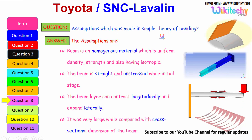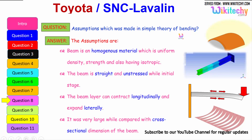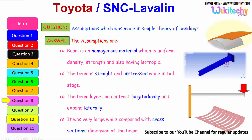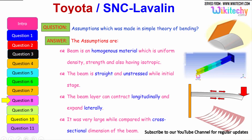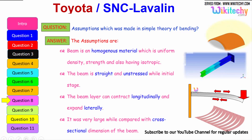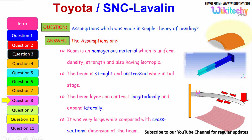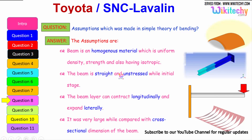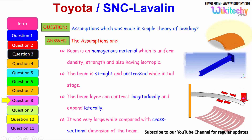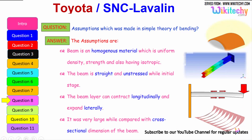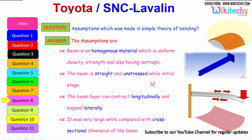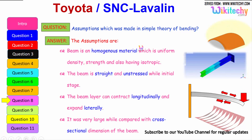What are the assumptions made in the simple theory of bending? The assumptions are: the beam is a homogeneous material with uniform density, uniform strength, and is isotropic; the beam is straight and unstressed in its initial stage; the beam can contract longitudinally and expand laterally; and the length of the beam is very large when compared with the cross-sectional dimension of the beam. These are the assumptions we make for the simple theory of bending.